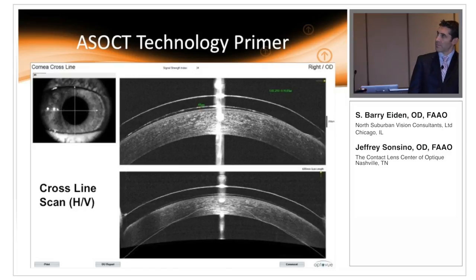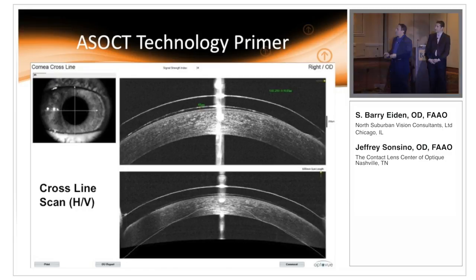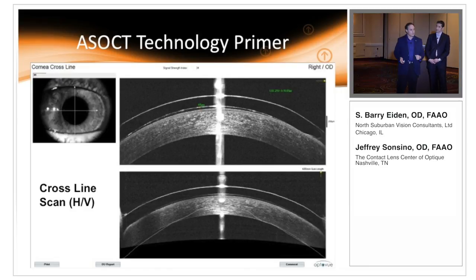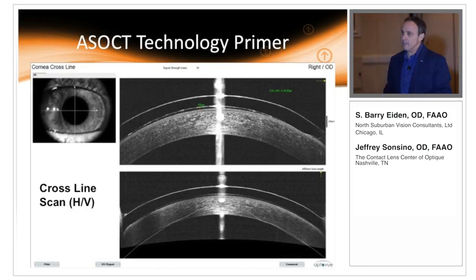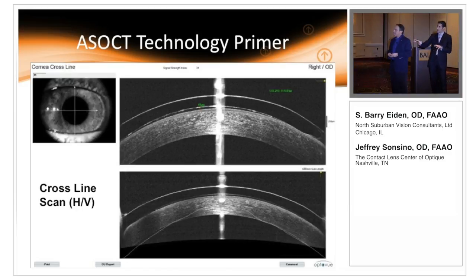Barry's going to talk about radial scans and 3D corneal scans as well. Here is the cross scan, which is really the mainstay of what we do — at least initially in the central portion of the analysis of vaulting lenses. You can see you get a vertical and horizontal cut.